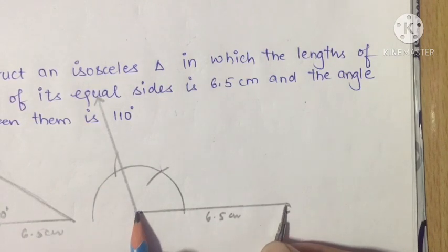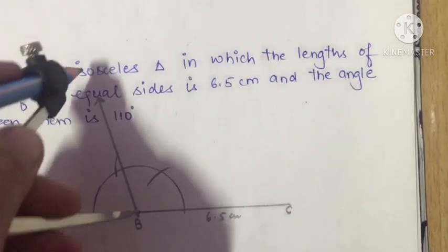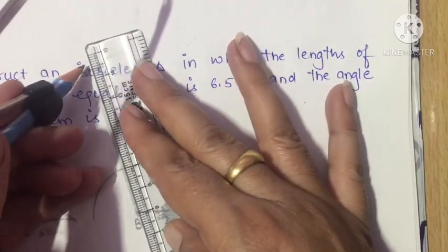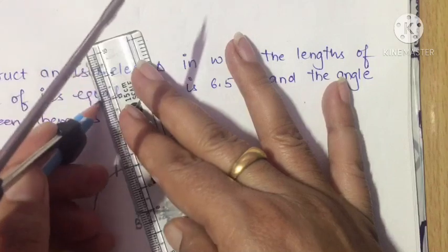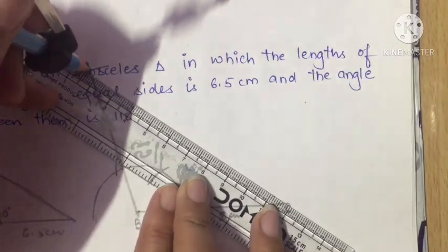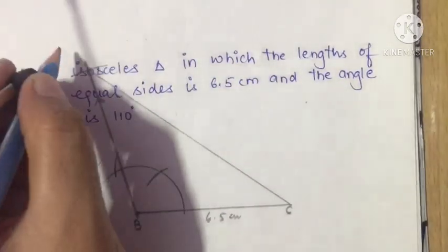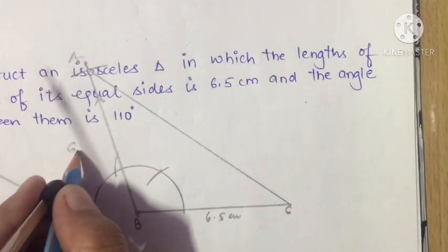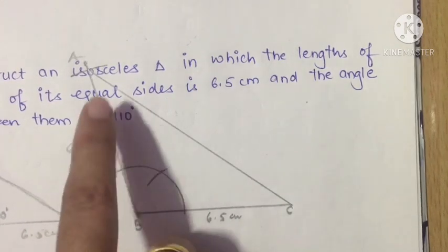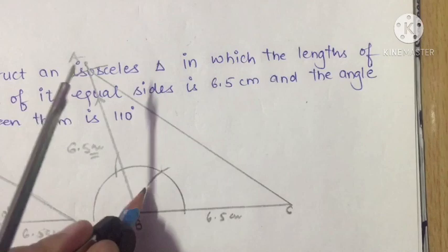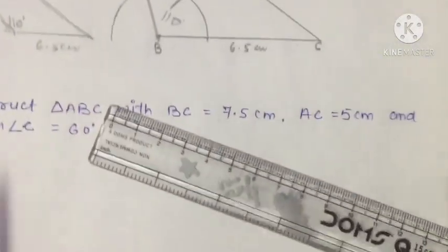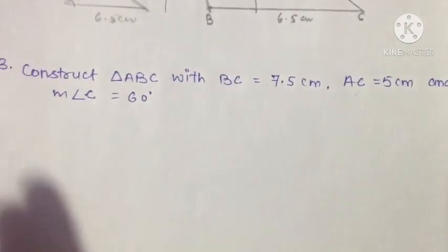Cut at 6.5 cm to get a small point, giving you triangle ABC. Mention that both equal sides are 6.5 cm. This is your isosceles triangle — the angle between the equal sides is 110 degrees, and the two base angles are equal to each other.